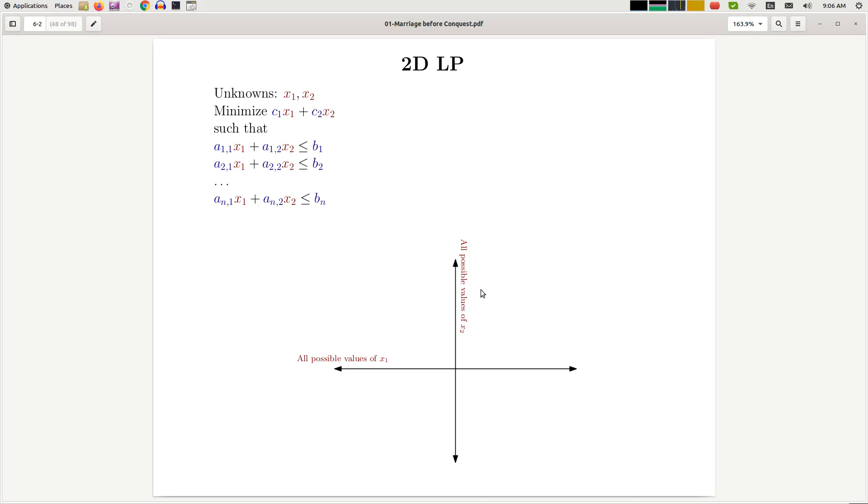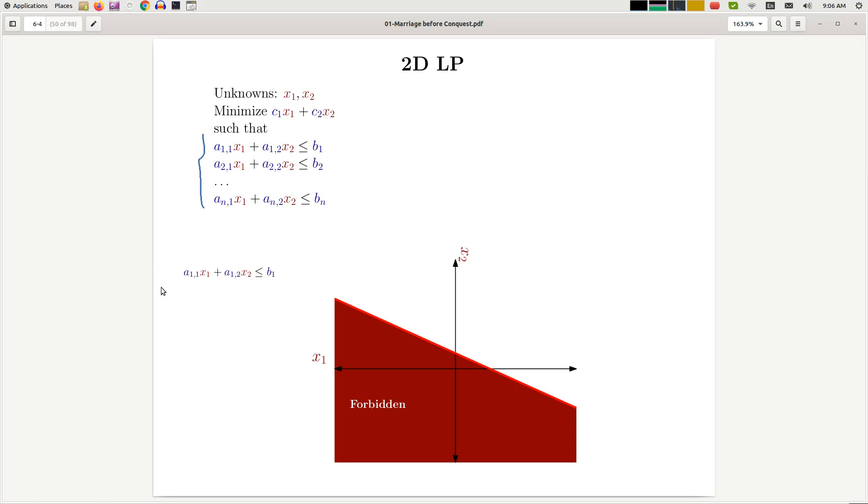Before understanding the objective function, let's try to understand what constraints mean. So let's look at one constraint, this constraint here. I want to claim that this constraint is equivalent to forbidding an entire half plane.